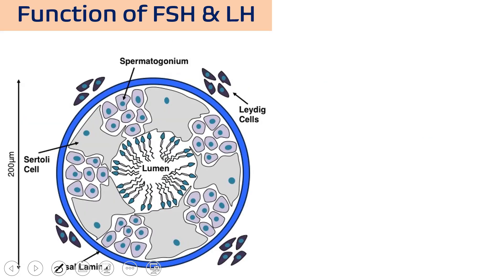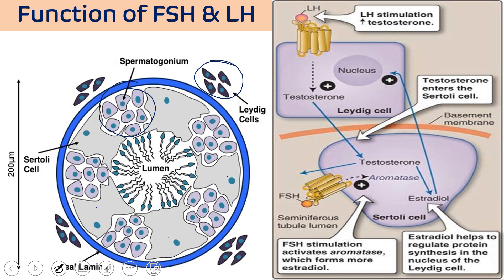Looking at how FSH and LH produce testosterone and estrogen, in the testes there is a cross-section of the seminiferous tubules. The cells outside the basal lamina are called Leydig cells, and the large cells inside are Sertoli cells. LH, once released from the pituitary, travels through blood circulation to the testes where it binds to Leydig cells and stimulates testosterone production.